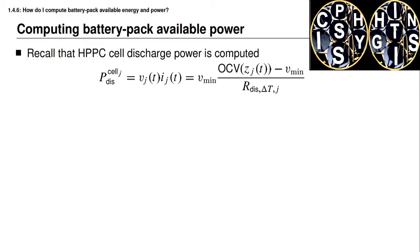Let's begin by looking at how to compute battery pack available power. Remember from last lesson that the HPPC method to compute cell discharge power evaluated the expression that discharge power equals the minimum permitted cell voltage multiplied by the quantity of present open circuit voltage minus the minimum voltage, all divided by the effective discharge resistance. I've updated the notation by adding the subscript j, so we remember this is a multi-cell battery pack, with voltage, current, and state of charge now denoted as V_j, I_j, and Z_j.